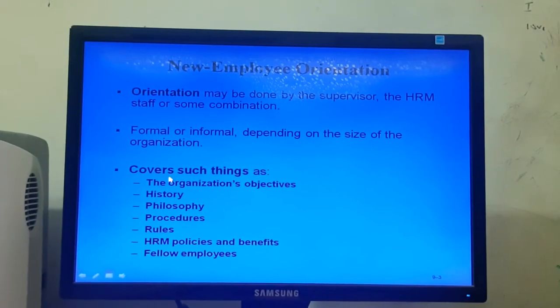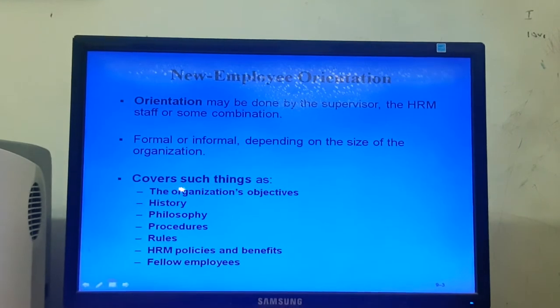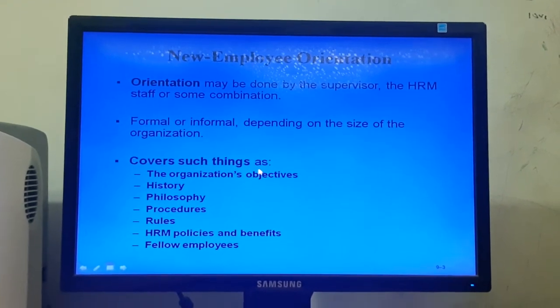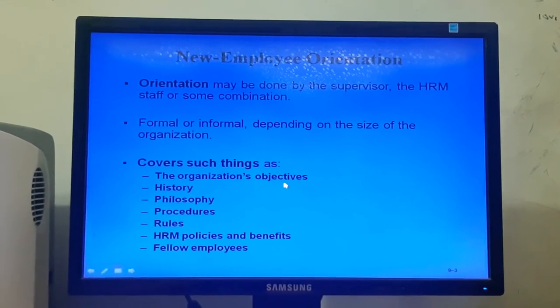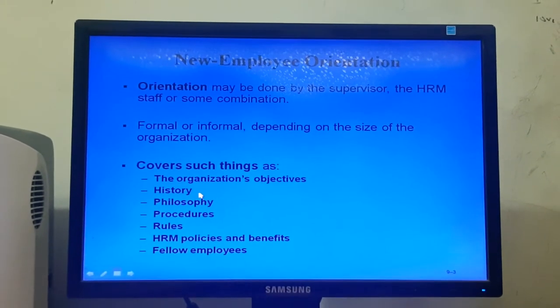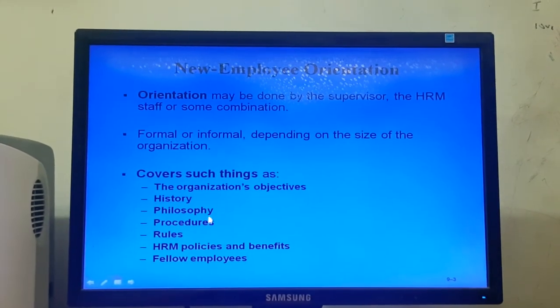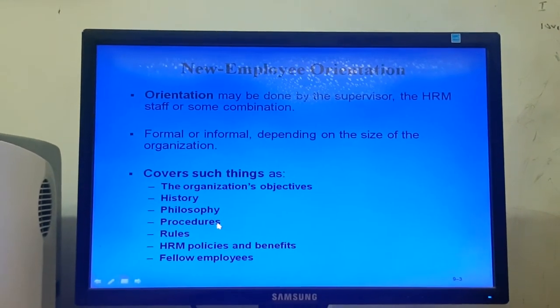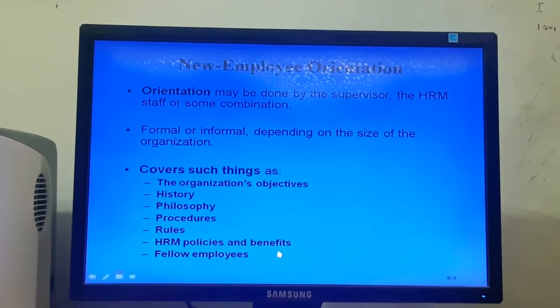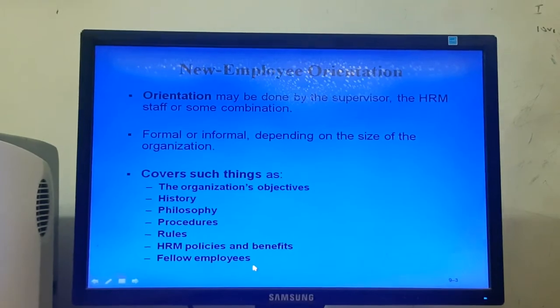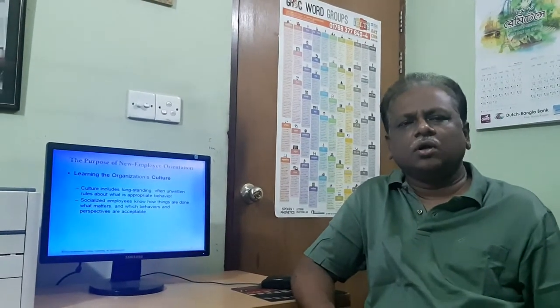Orientation can be formal or informal, or sometimes both. Usually an orientation program covers the following things: the organization's objectives, history, philosophy, procedures, rules, HRM policies and benefits, and fellow employees and colleagues.